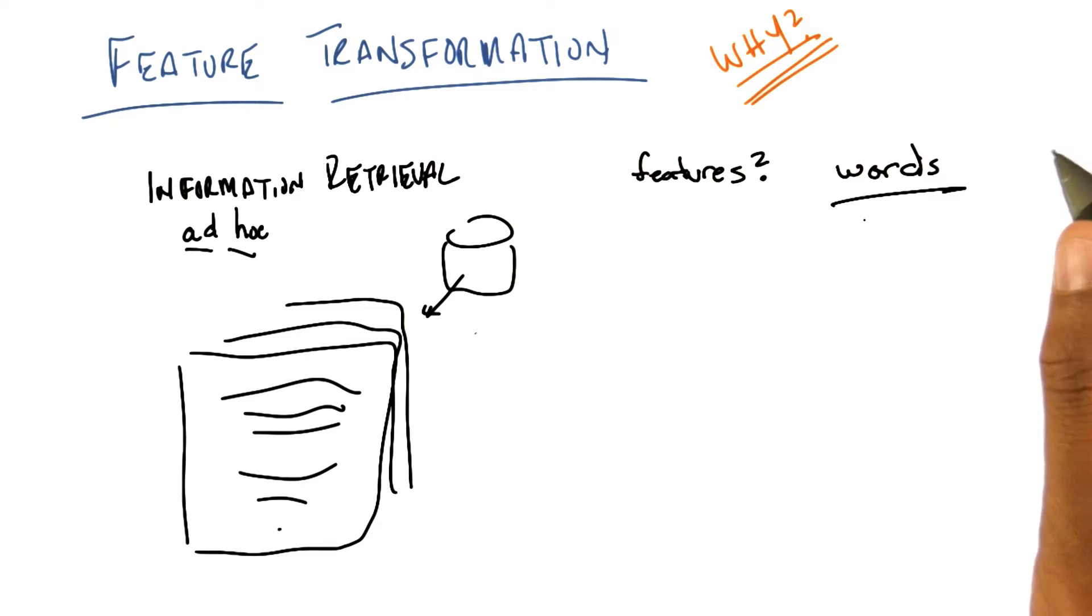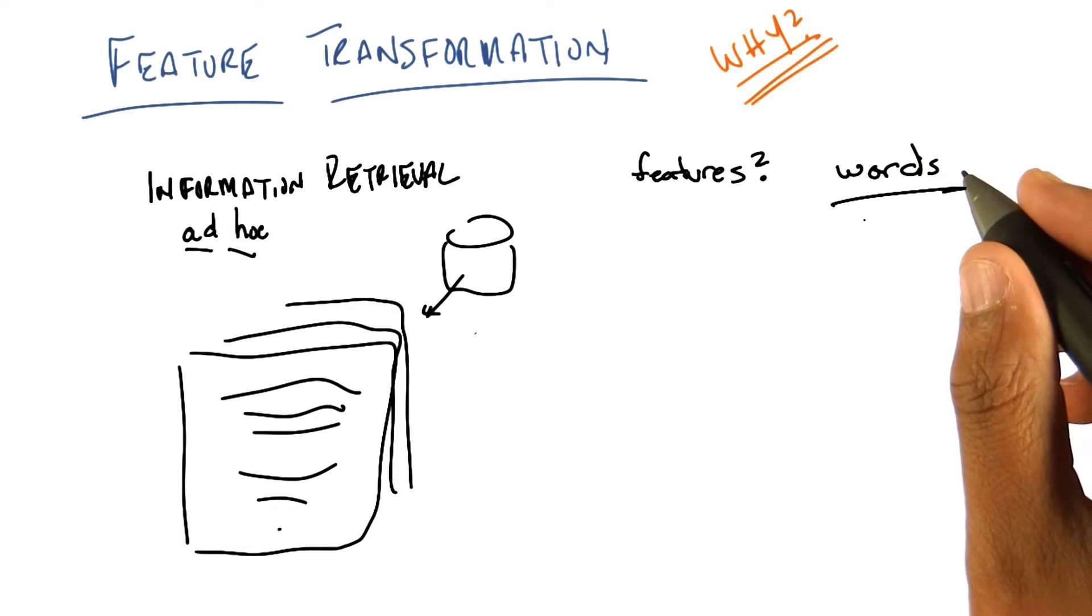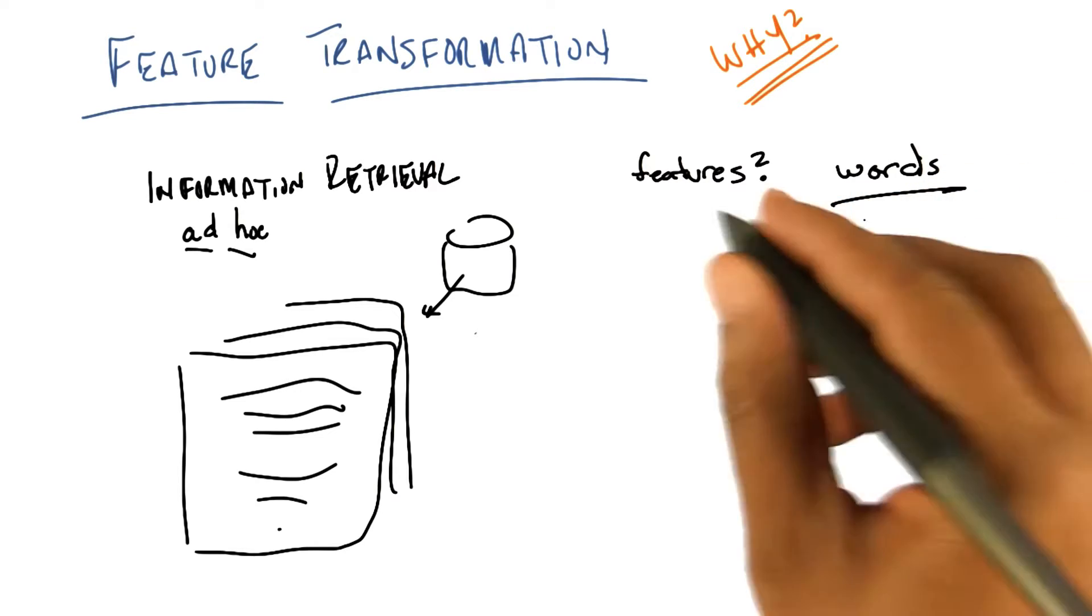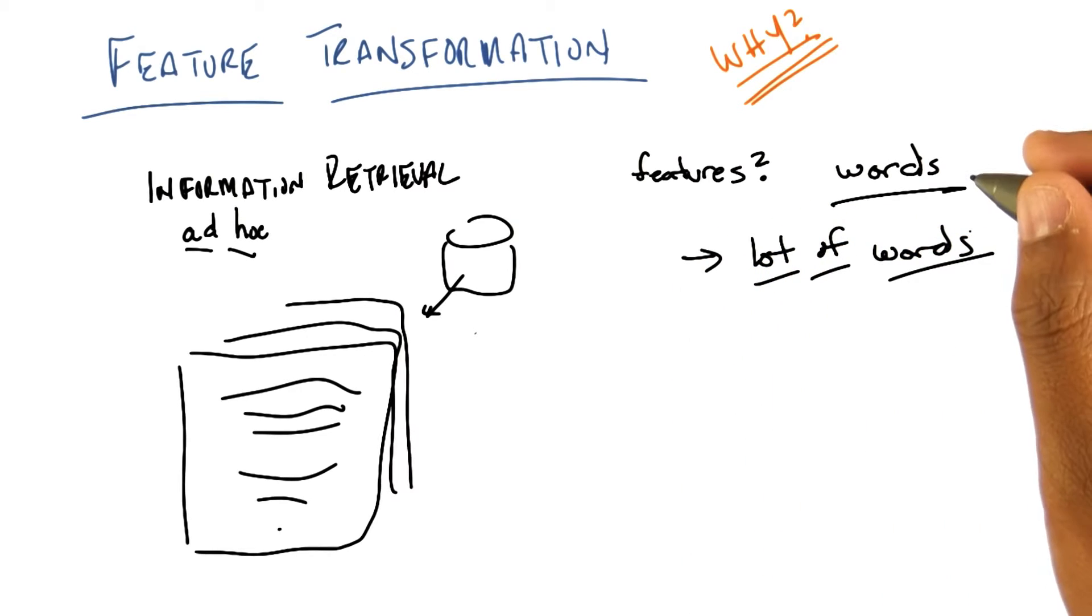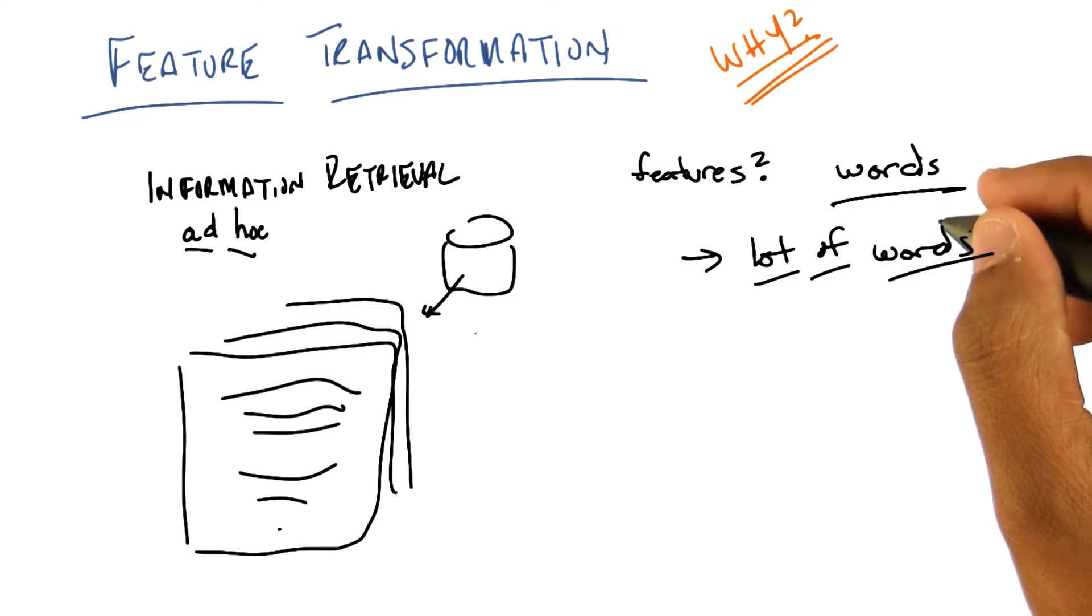Okay. So what's the problem with using words? Can you think of any problems with using words? Well, there's a lot of them. Right. That's actually the first thing. There's a lot of words, which means there are a lot of features, which means the curse of dimensionality is going to hurt us.